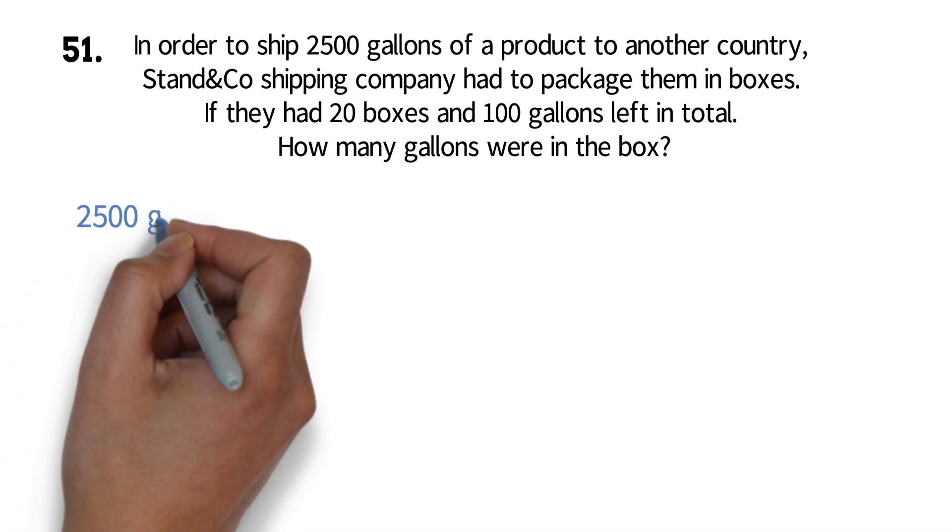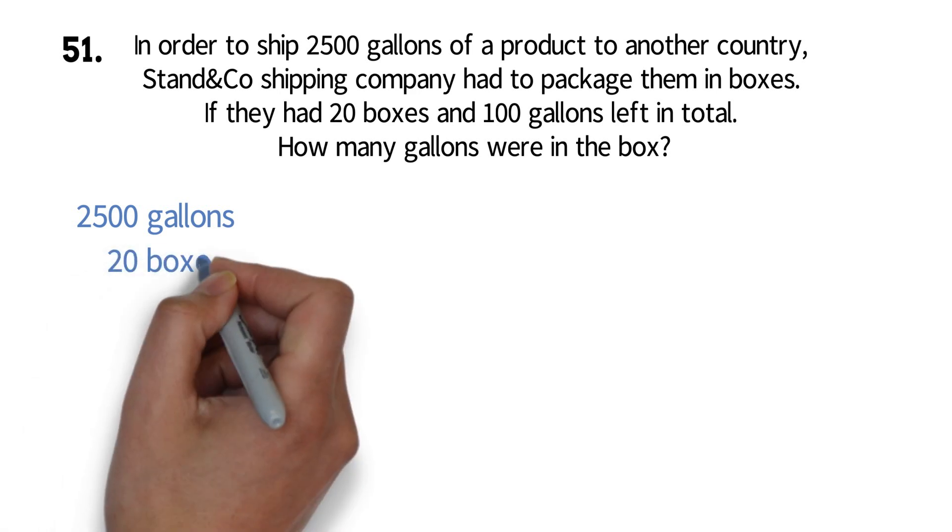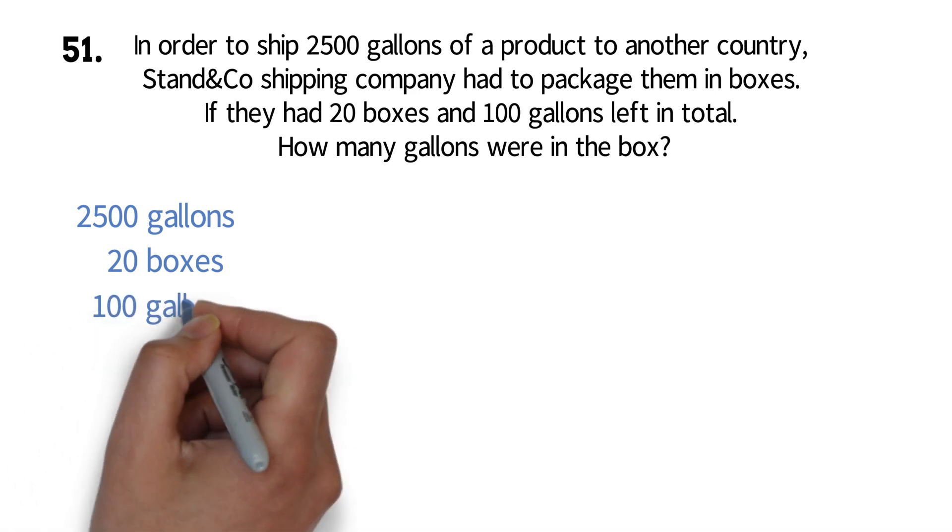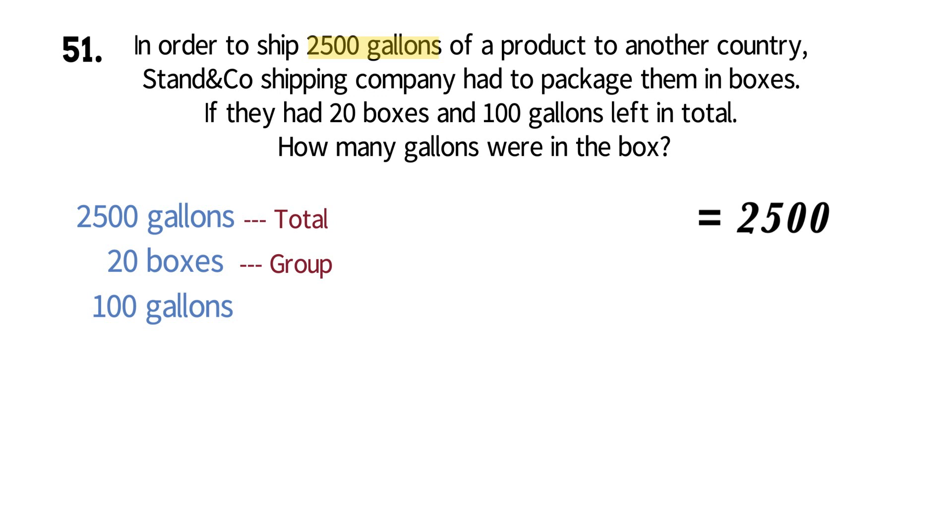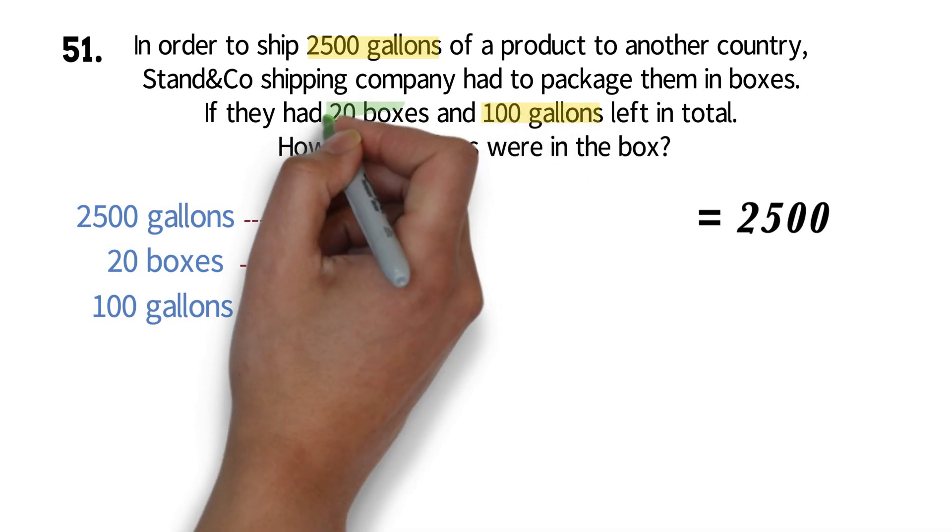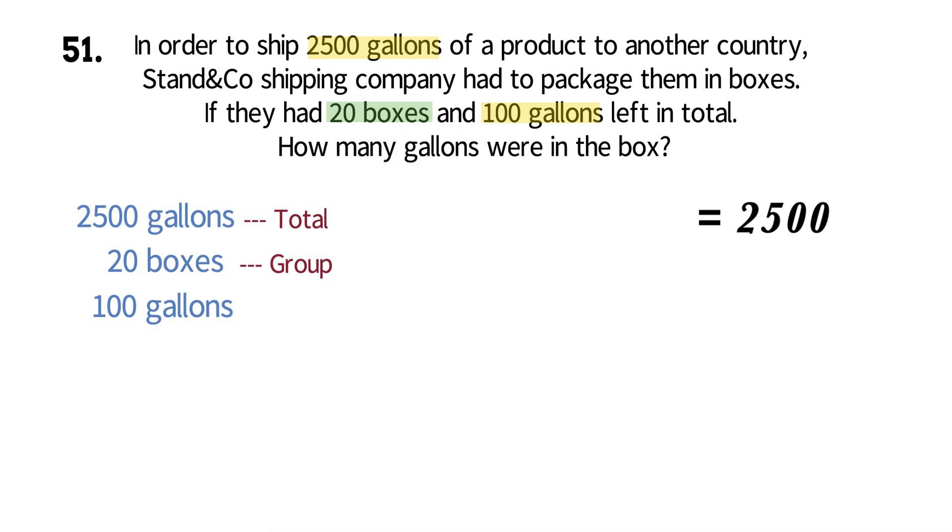We have 2,500 gallons, 20 boxes, and finally we have 100 gallons. The 2,500 gallons represents the total. So we have equals 2,500. The 20 boxes is what I call the group. The gallons have been grouped into boxes. For most questions, the group can also be identified as the number that represents something different from the other two numbers. So here, 2,500 represents gallons, the 100 also represents gallons, but the 20 represents boxes. So the 20 will be the group. The group is the one with the x. So we will have 20x.